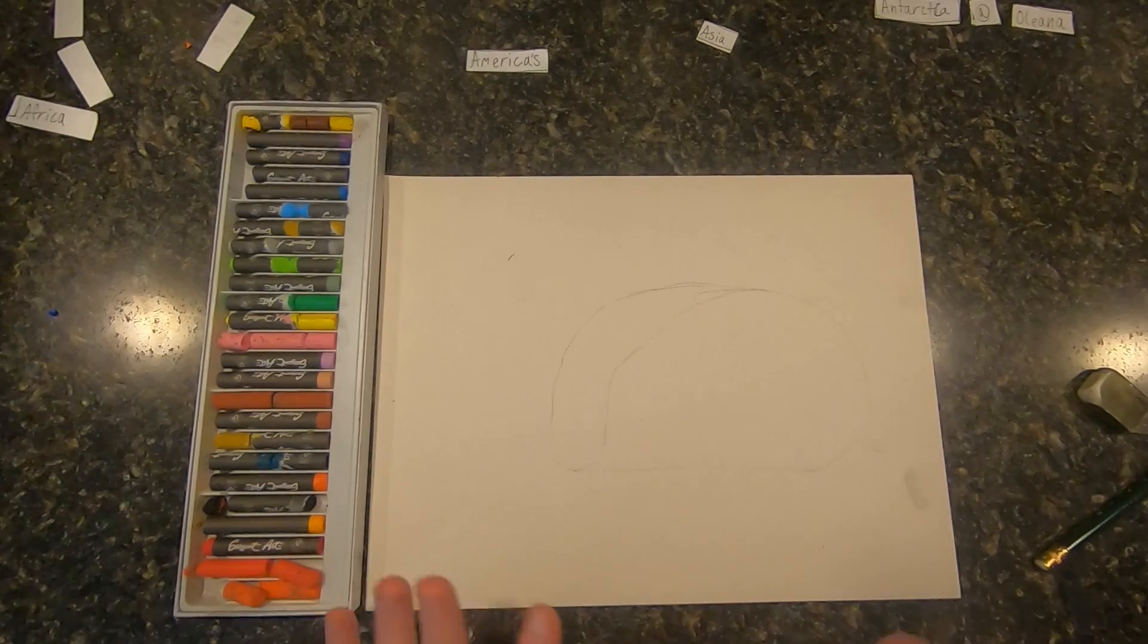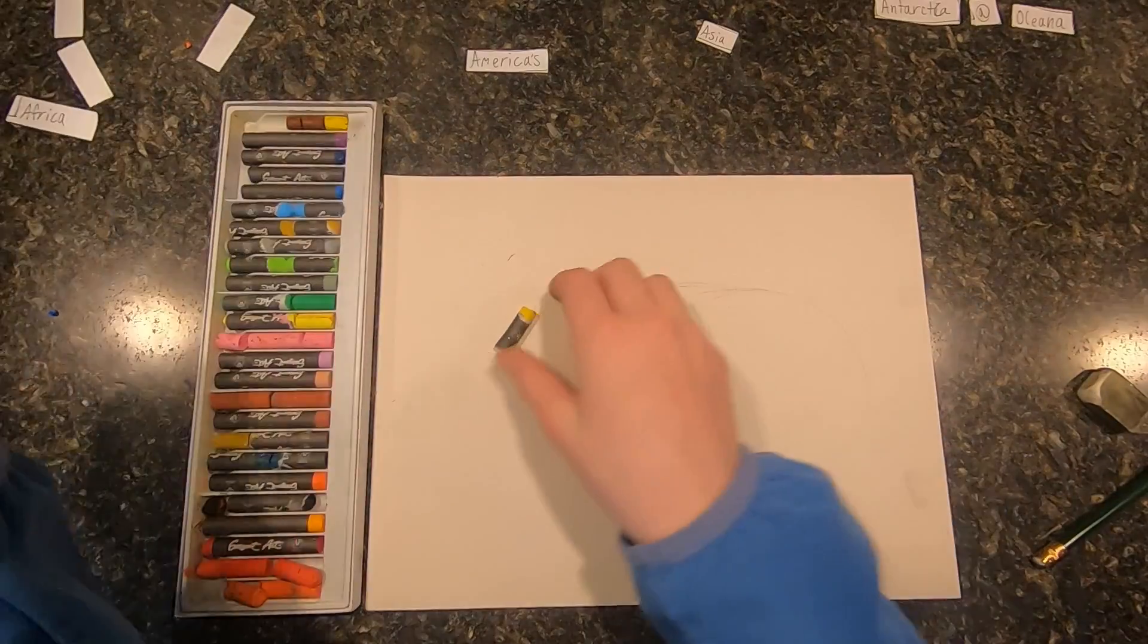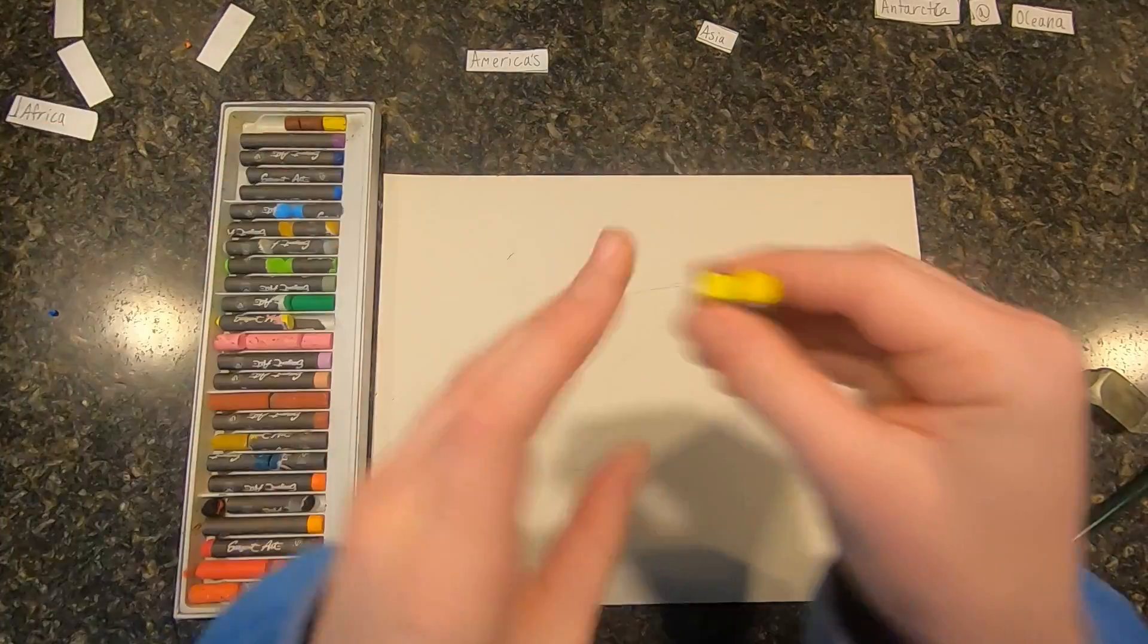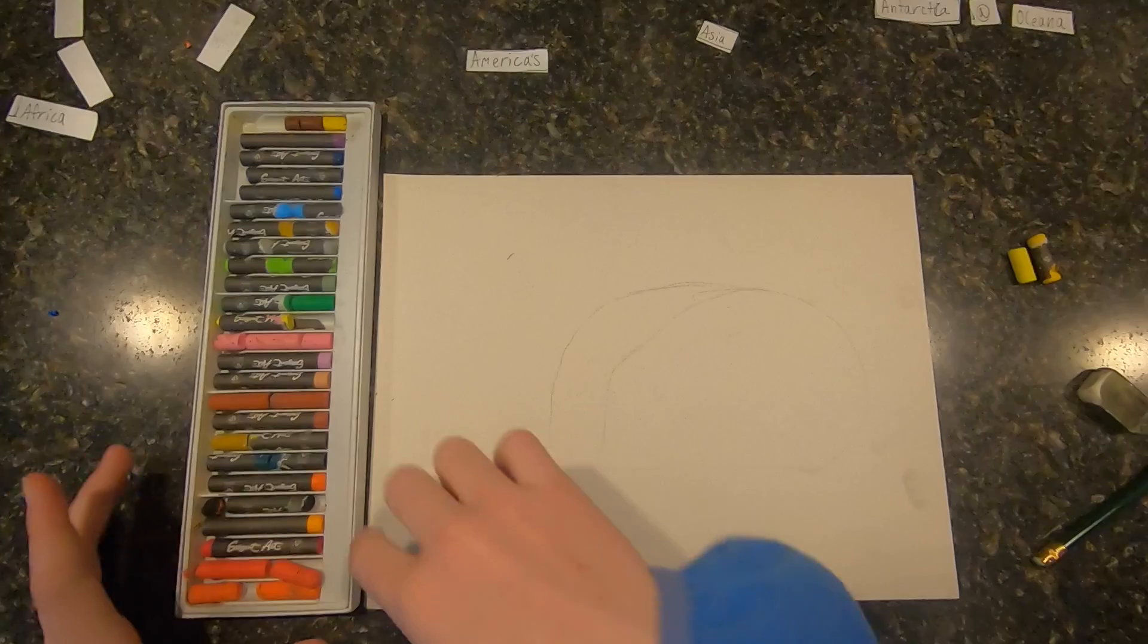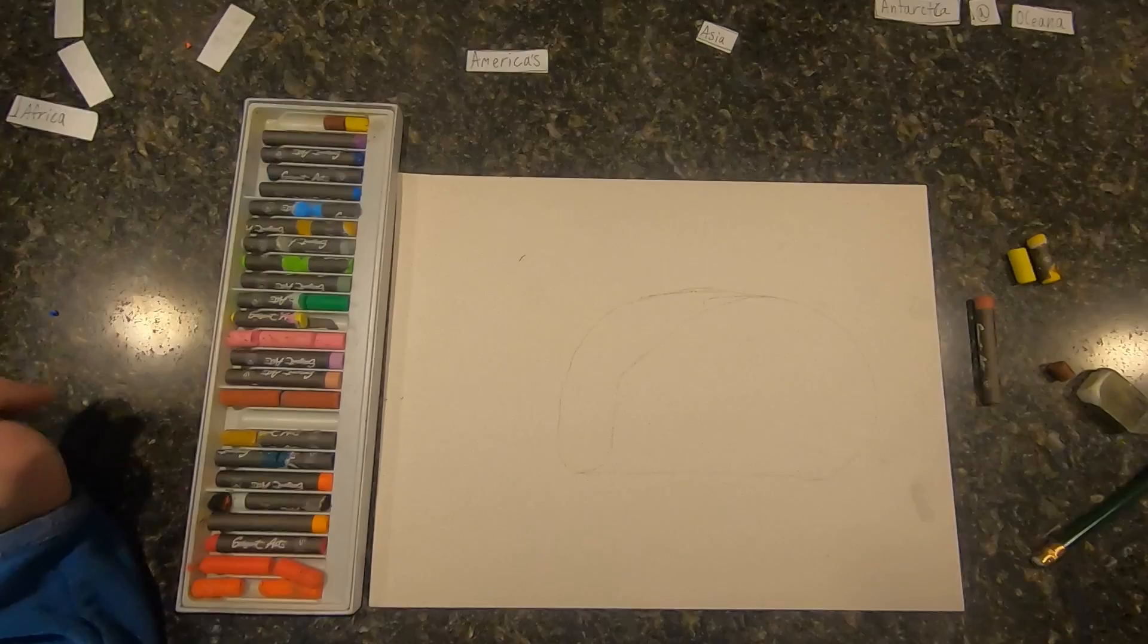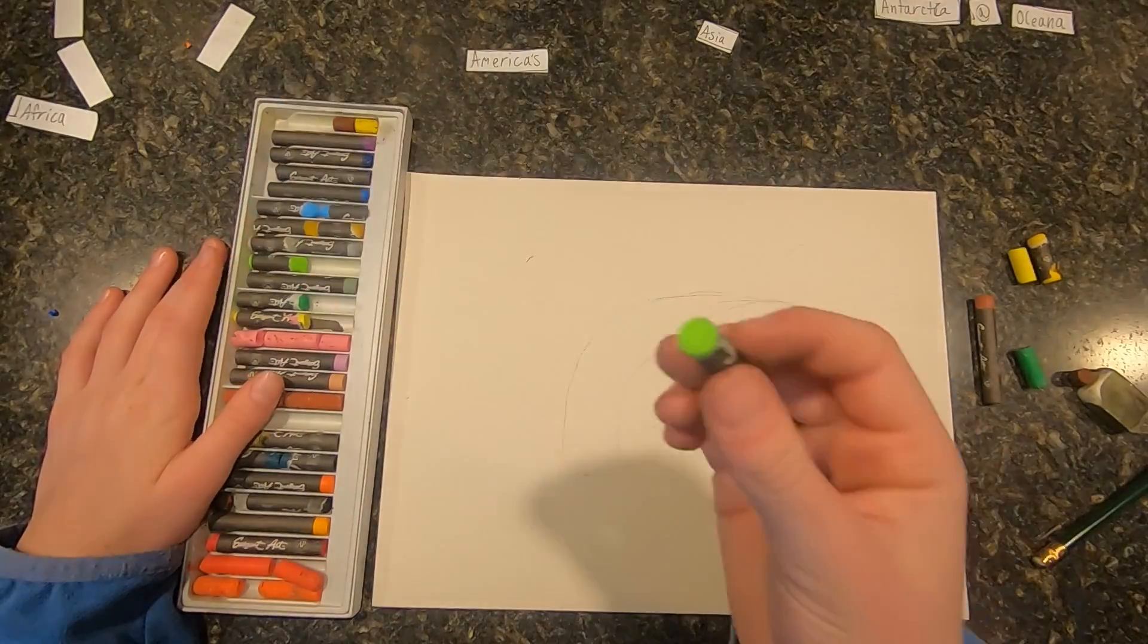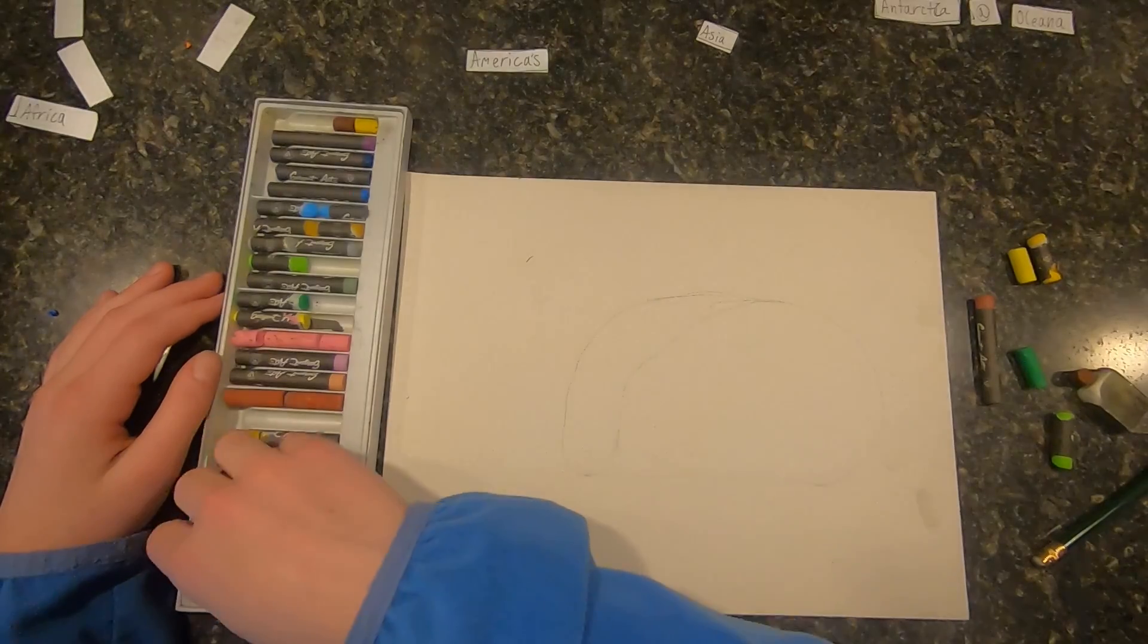And now I'm going to pick out my colors. I'm going to have two different kinds of yellow, a darker yellow and then a normal yellow. And I'm going to have a brown and then a darker brown, a dark green and then a lighter green, and then I am going to have a red.